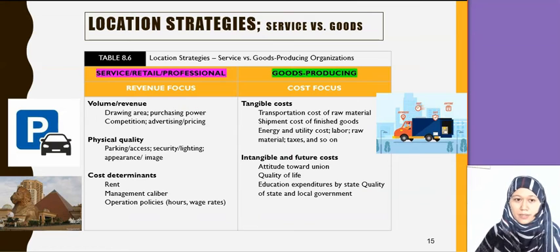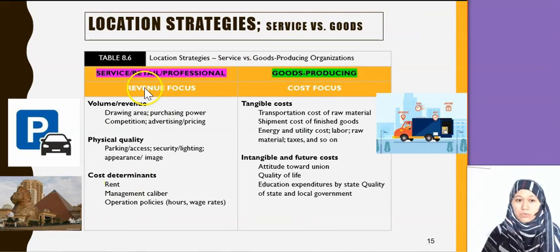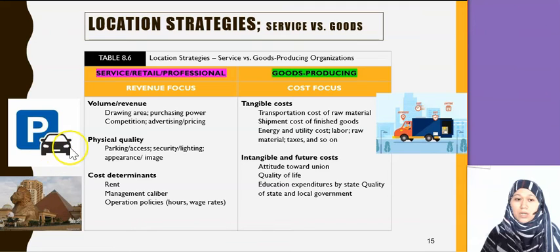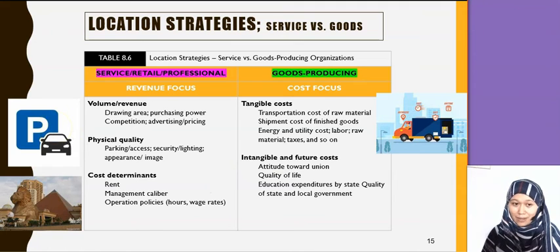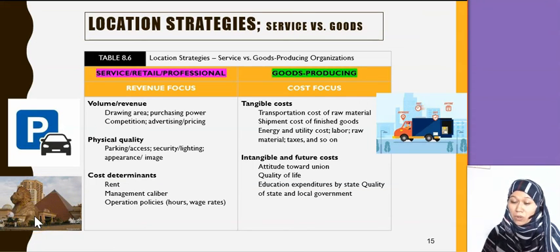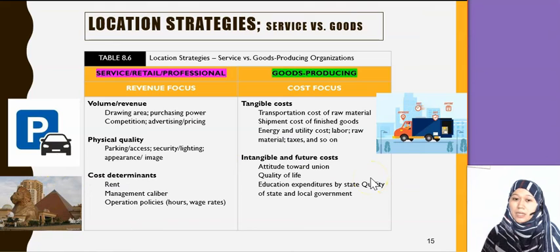Here is a comparison between service and goods in how they choose their location. For service, they look at parking, customer access — if you buka restaurant, bank, atau hospital, parking is very important. But for goods producing, they don't need customer parking sebab the customer doesn't go to the factory. For services, the location near a mall is important. For goods producing, they focus more on land and highway access.